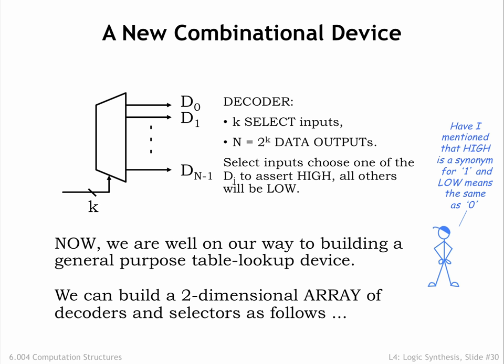Only one of the data outputs will be 1 or high at any given time, which one is determined by the value on the select inputs. The j-th output will be 1 when the select lines are set to the binary representation of j.